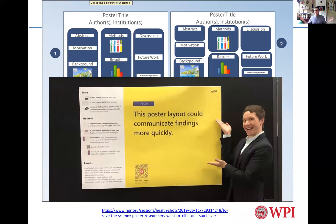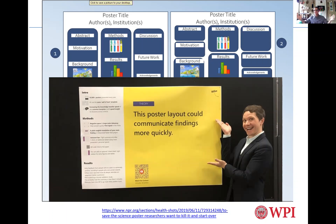About three years ago, these new poster styles started coming up where research says to put the main point very large, and then you can use QR codes — everyone's got a smartphone now — to show results and methods in more detail. I'm an engineer and I like structure. I like people to come because they see the title and topic, and I like to have enough on my poster that I can walk through it like a slide presentation. But these newer styles are getting popular, so it's up to you.